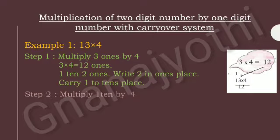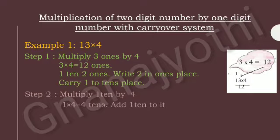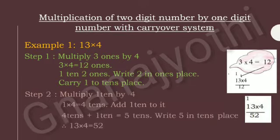Now, look at Step 2. Multiply 1 ten by 4. If we multiply 1 ten by 4, we get 4 tens. Then add 1 ten to it. So, 4 tens plus 1 ten is 5 tens. Write 5 in the tens place. Therefore, if we multiply 13 into 4, we get 52.